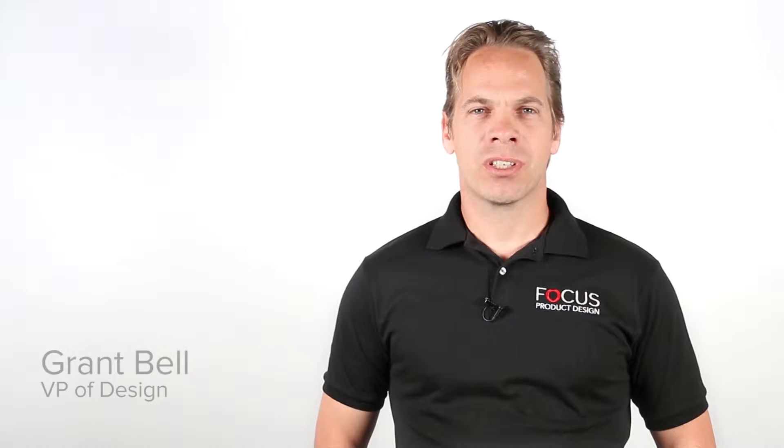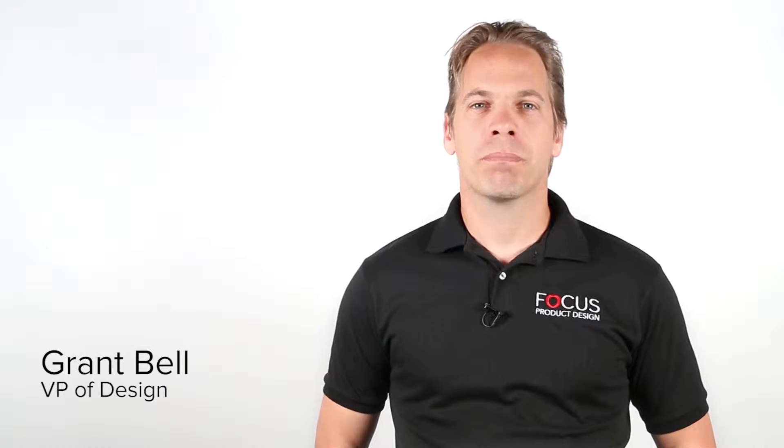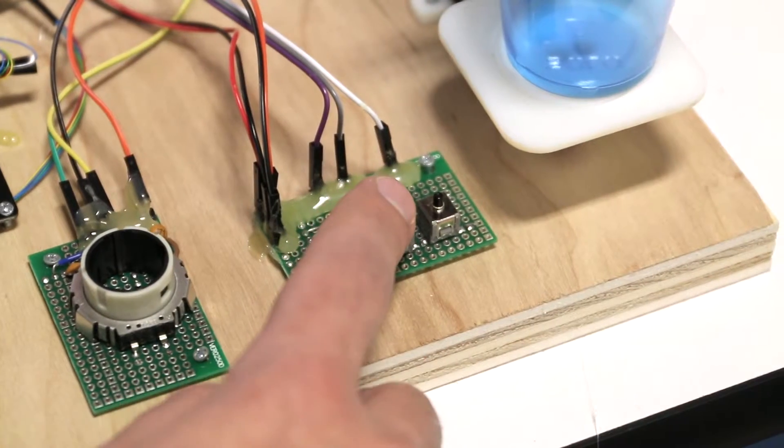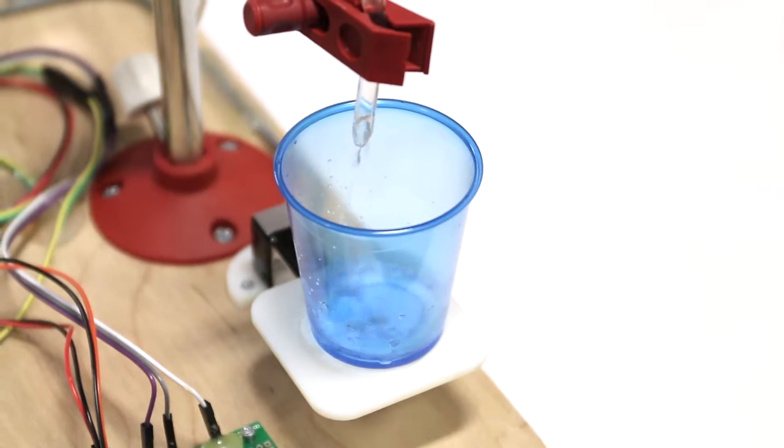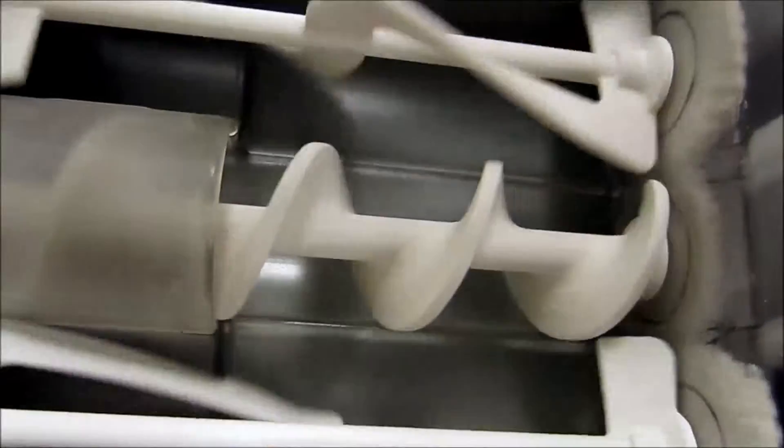A functional prototype captures key operational features and mechanisms but does not reflect the final appearance. Before we begin creating a functional prototype, a working proof of concept prototype demonstrating key electrical and mechanical feasibility is required.